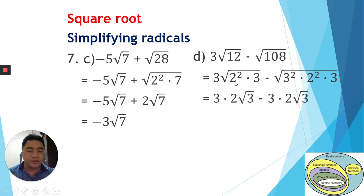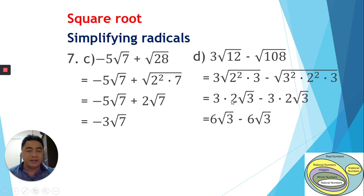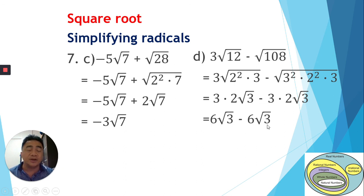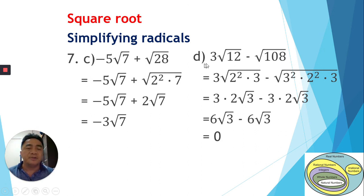Multiplying the extracted values: 3 times 2 is 6, giving us 6√3; and 3 times 2 is 6, giving us 6√3. Now the coefficients are the same and the radicands are the same. Since this is subtraction, 6√3 minus 6√3 equals 0. The simplified form is 0. Thank you very much — more videos on square roots coming in the next days. Bye!